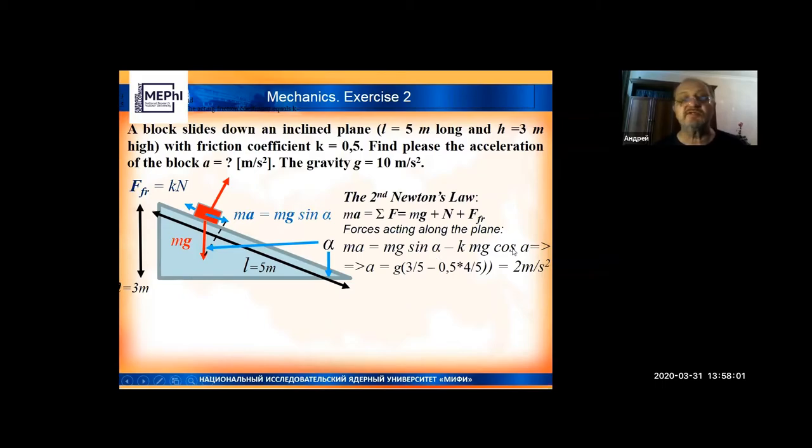How to calculate sines and cosines? Looking at the picture. Sine of the inclination angle is the ratio of height to length, 3 to 5. Cosine is the ratio of the horizontal side to the diagonal, 4 to 5. This is multiplied by the friction coefficient μ = 0.5 given in the condition. After you substitute everything, you will find the result: 2 meters per second squared. This will be the acceleration of the block.